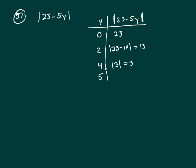We're close. Let's do 5, 23 minus 25, sorry, 23 minus 25 is the absolute value of negative 2, which is 2.